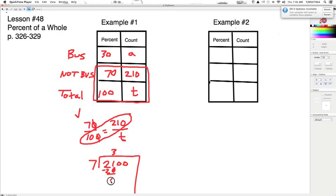21 with two zeros left over. So we know that the total number of students would be 300. And if we go 300 minus 210, this should be 90.